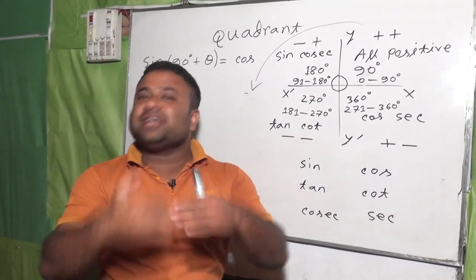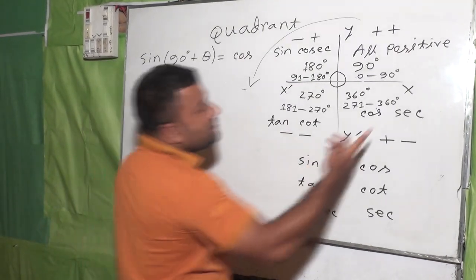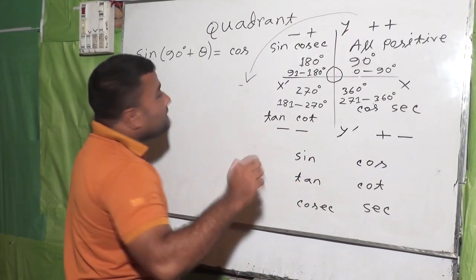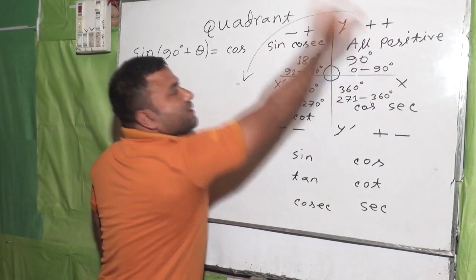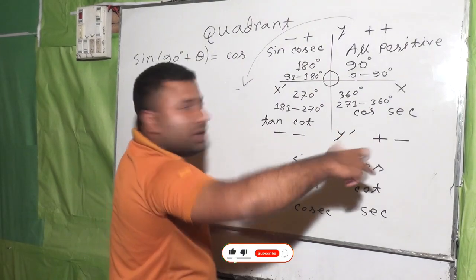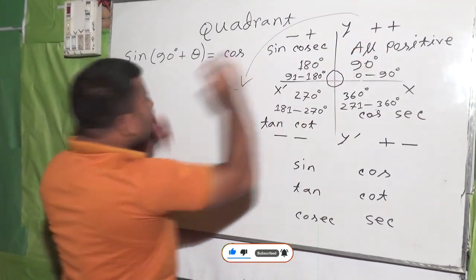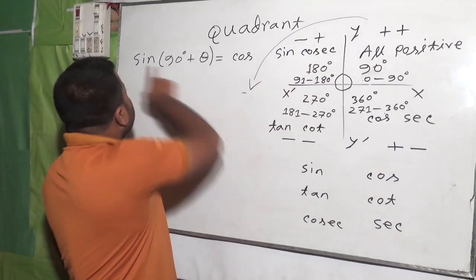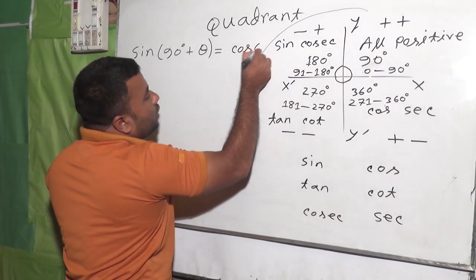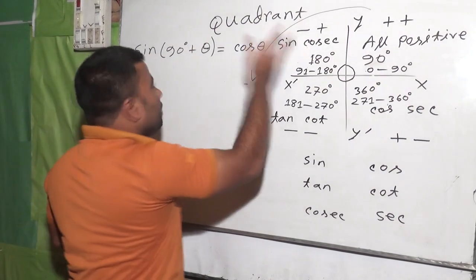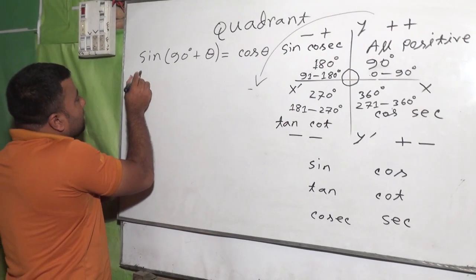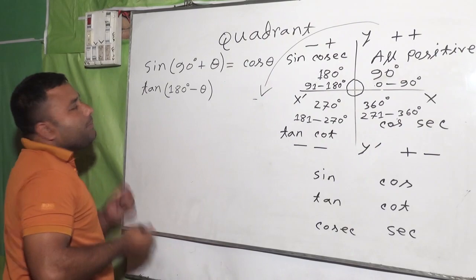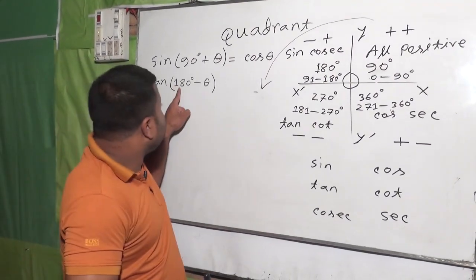90 degrees plus theta means that 90 degrees is the best quadrant reference. So I have already explained this. The best part is that 90 degrees is the best — I will write the whole theta. The sine of the sine remains the same. Now I will say tan(180° − θ). See, this is tan 180 degrees.